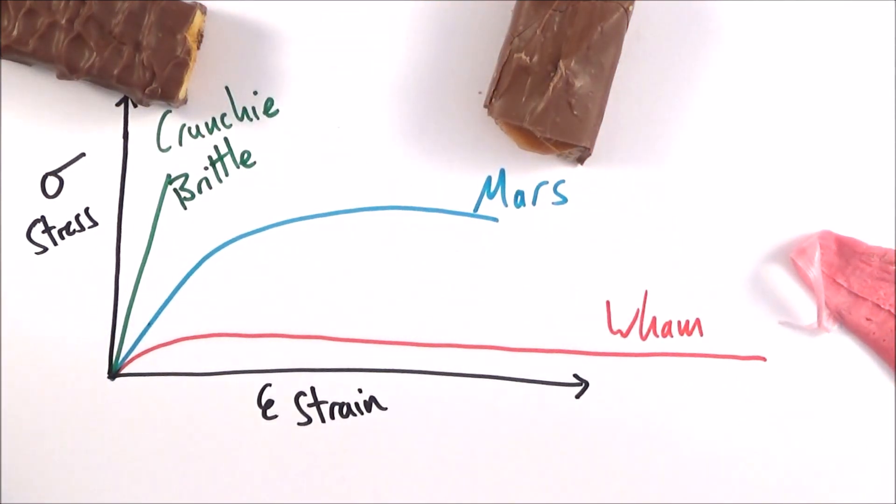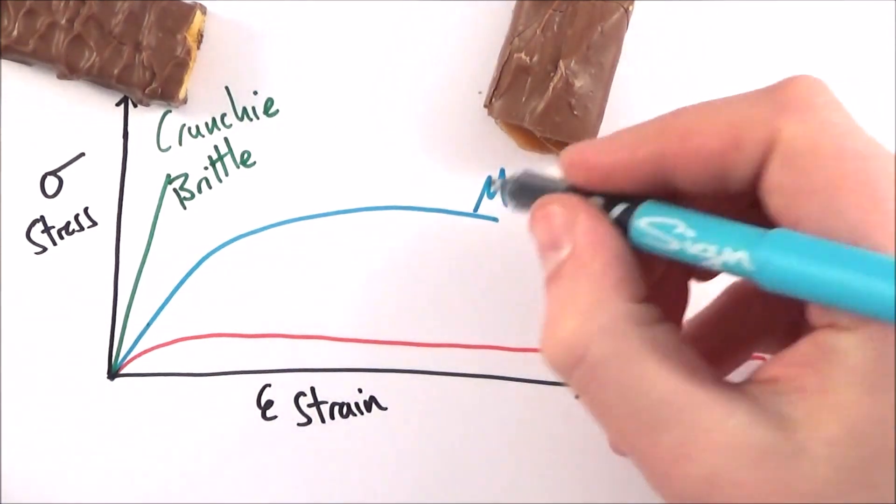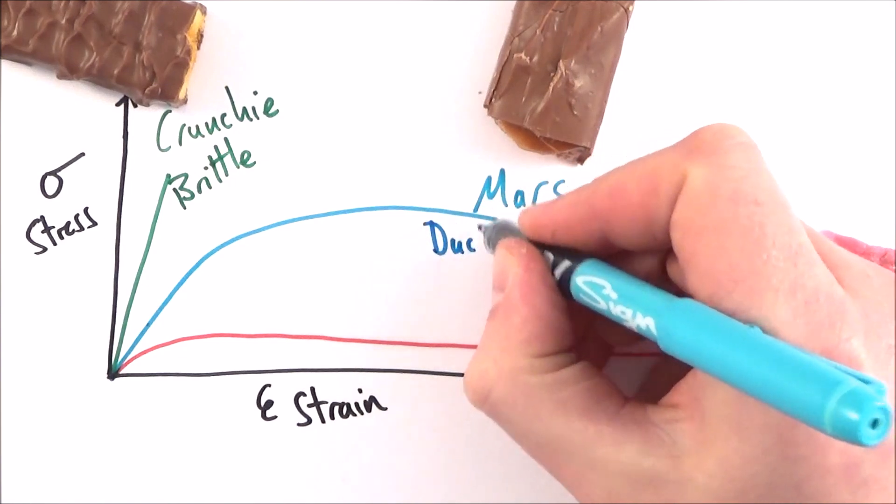Now, most materials, like most metal that we see in everyday life, are a bit more like a Mars bar. So things like aluminum, steel, copper. And what we have is a ductile metal.